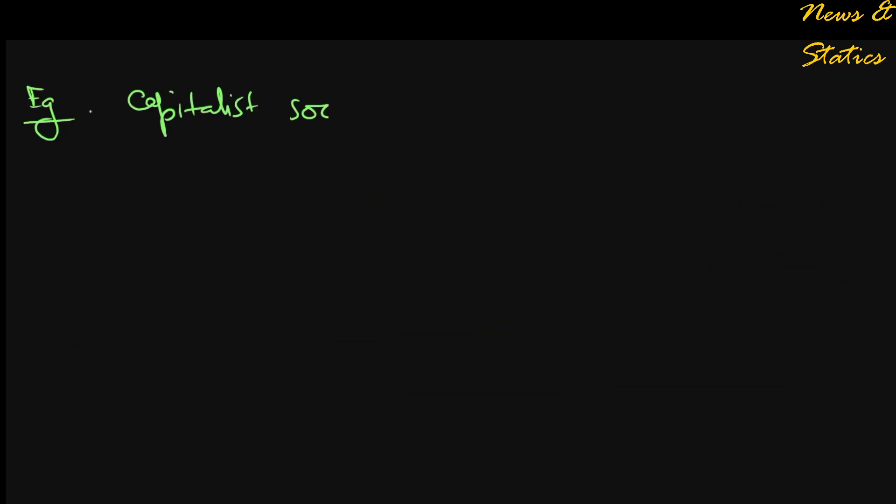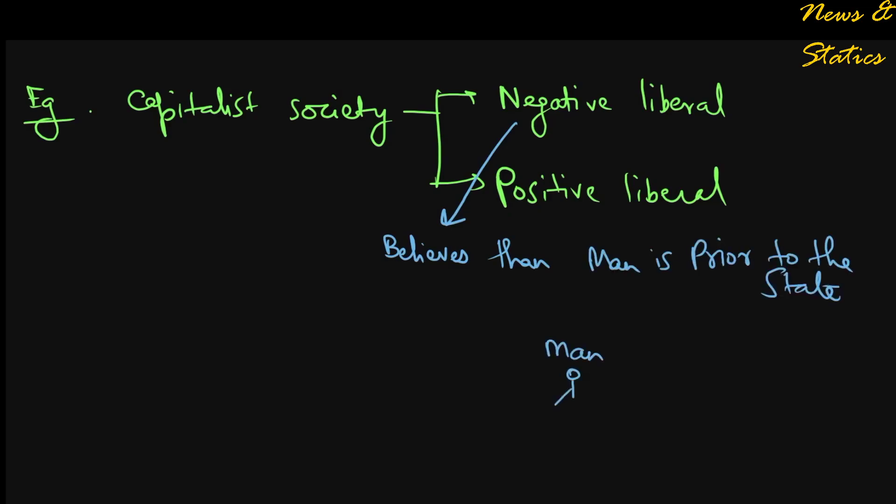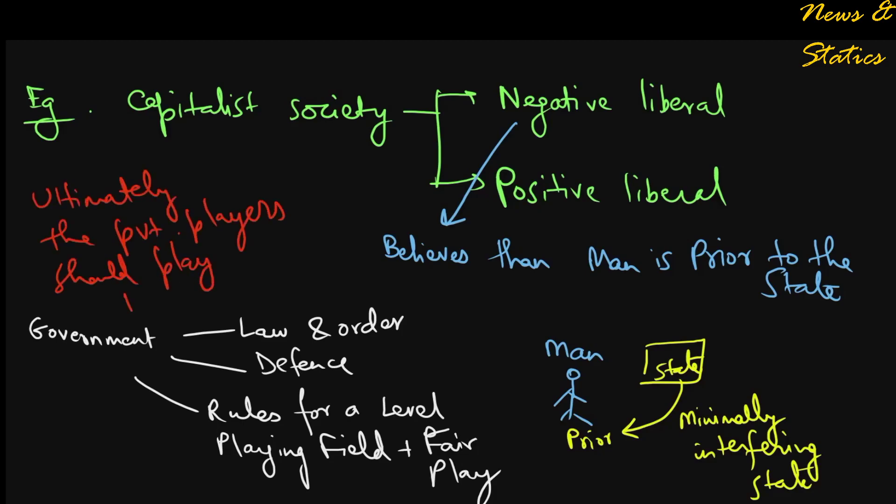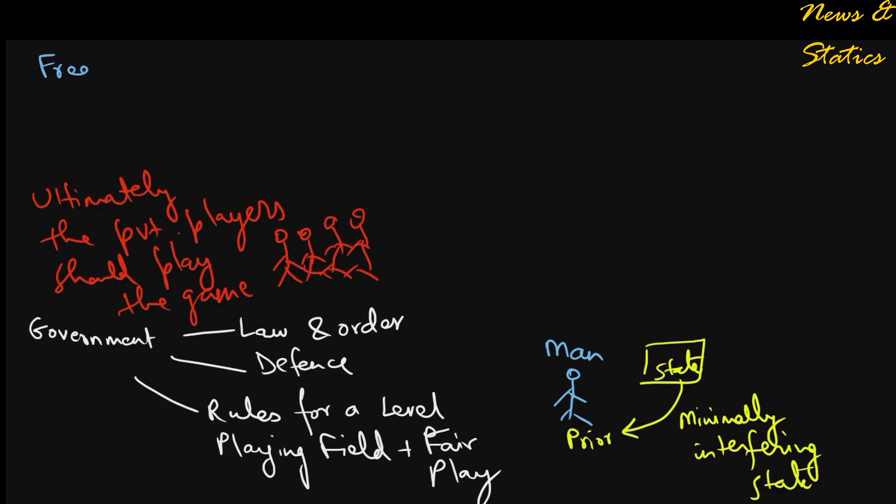That depends on the governing apparatus of the state. If it's a capitalist society, we can have two types of states. One is the negative liberal type which believes that man is prior to the state, and so the state should have minimum interference in the affairs of the individual. The government should ensure law and order, defense and rules for a level playing field and fair play, but that's all.